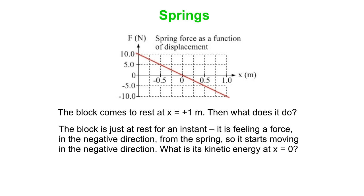So what is its kinetic energy when it gets back to x equals 0? Well now you get all the energy back, getting back to 5 joules. But now the velocity, of course, is in the negative direction.